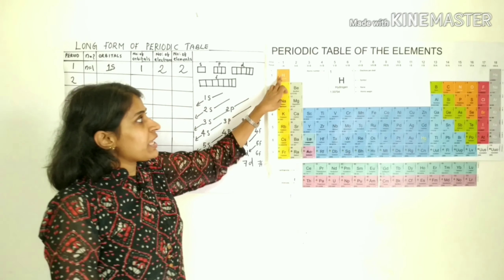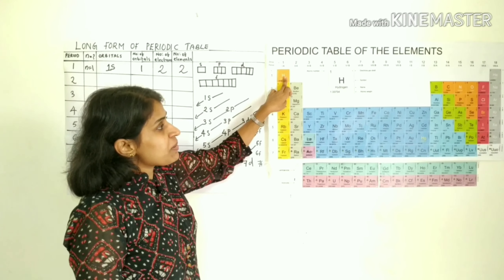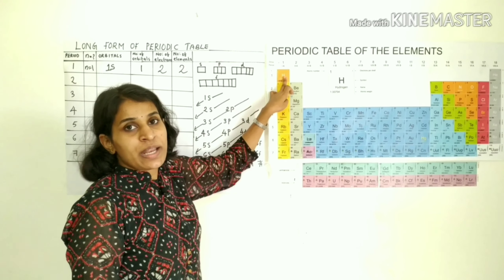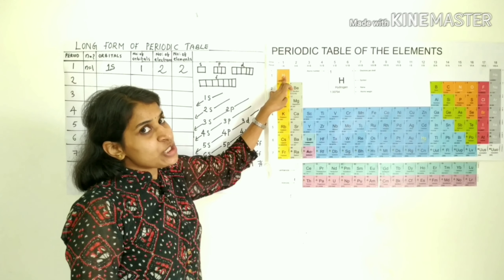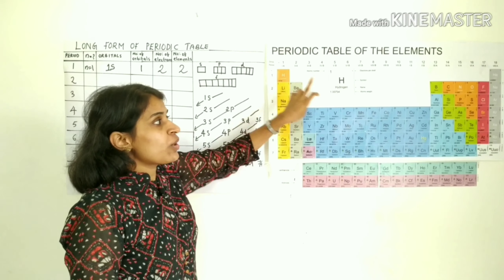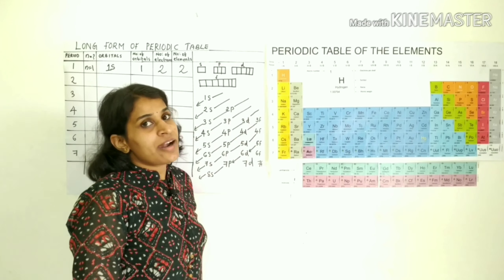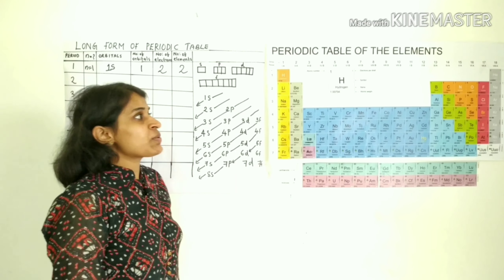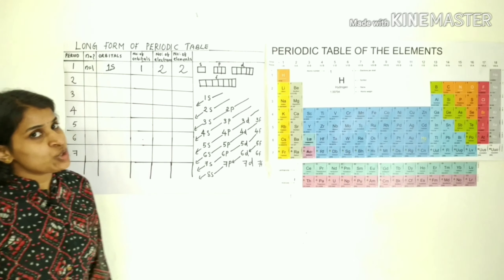In the periodic table, the first period elements are hydrogen and helium. Hydrogen has 1 electron (1s1) and helium has 2 electrons (1s2).